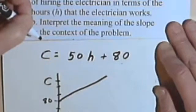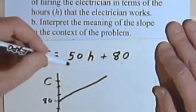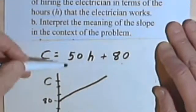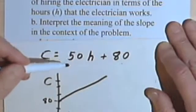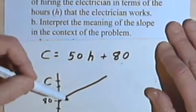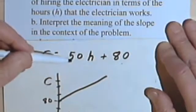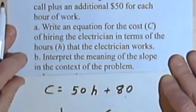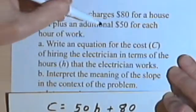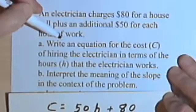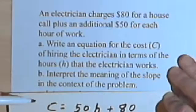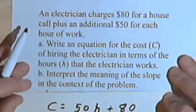The slope is 50, but the meaning has to do with the word problem itself. That 50 means that for each hour of work, he charges $50 — the rate of increase at which he's earning money is $50 per hour. It actually tells you that right in the problem: he charges an additional $50 for each hour of work. So the slope, in terms of its meaning, is usually going to be the rate at which something happens.